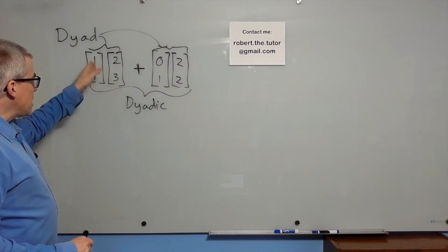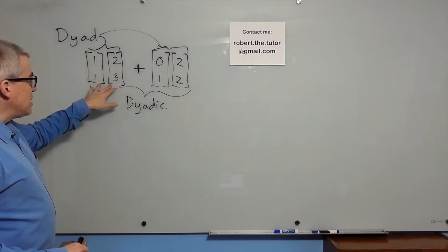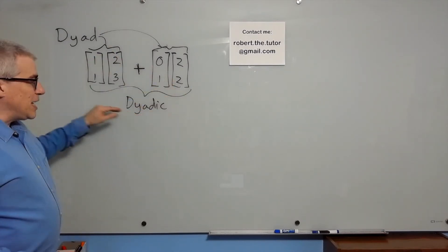So if you do vector next to vector, that's a dyad. If you add up dyads, you get a dyadic.